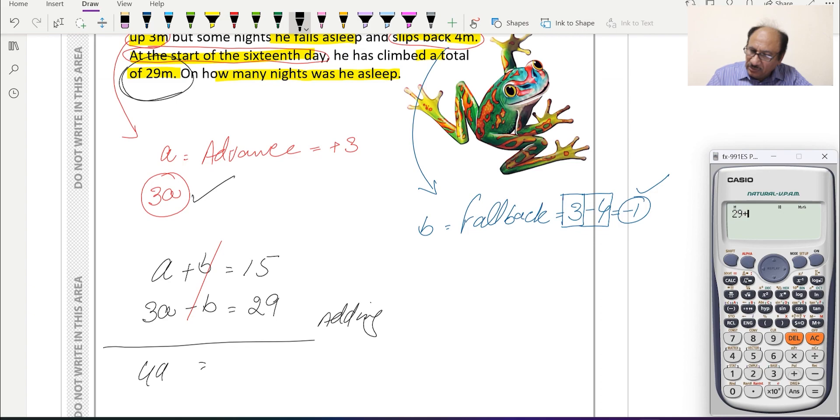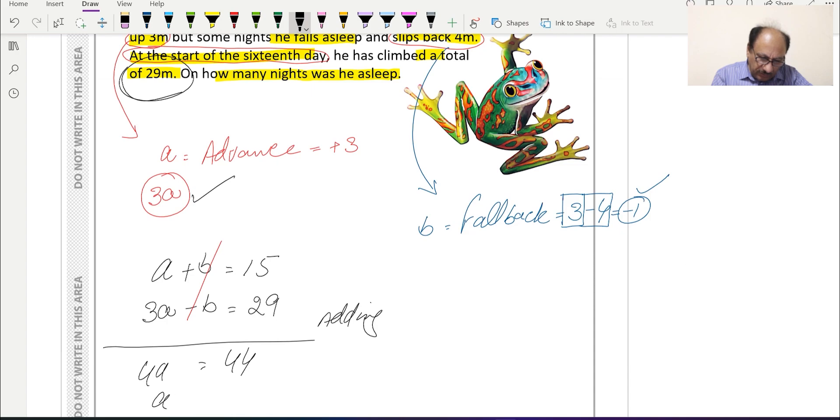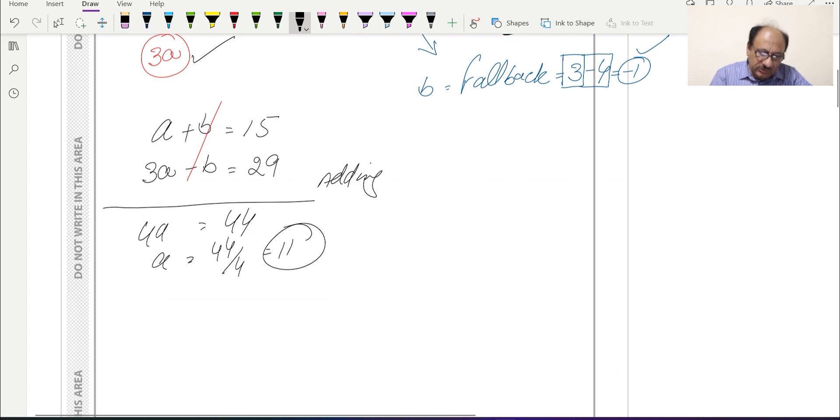It will be 4a equals 29 plus 15, and 29 plus 15 equals 44. So 'a' value will be 44 over 4, which equals 11. So 11 days he climbed up.